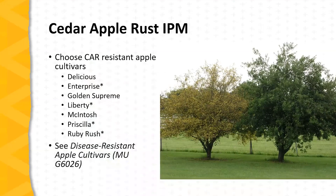The first line of management is to look at the apple or crab apple host. Fortunately, we have a number of apple and crab apple cultivars that are resistant to cedar apple rust. For home orchardists, it's in their interest to choose those resistant cultivars. A publication on disease-resistant apple cultivars developed by University of Missouri Extension lists apple cultivars that are resistant to a range of apple diseases, including cedar apple rust.